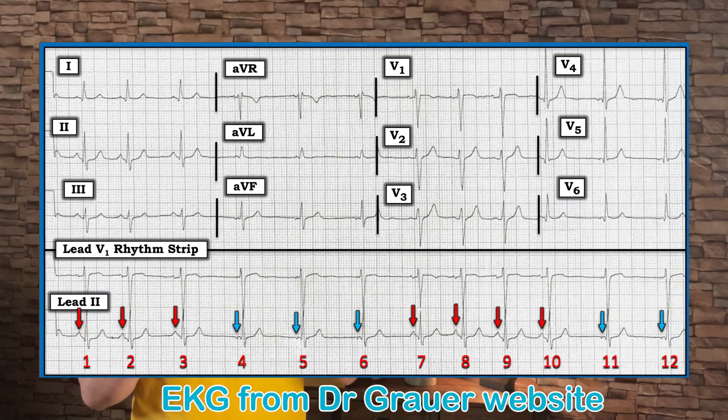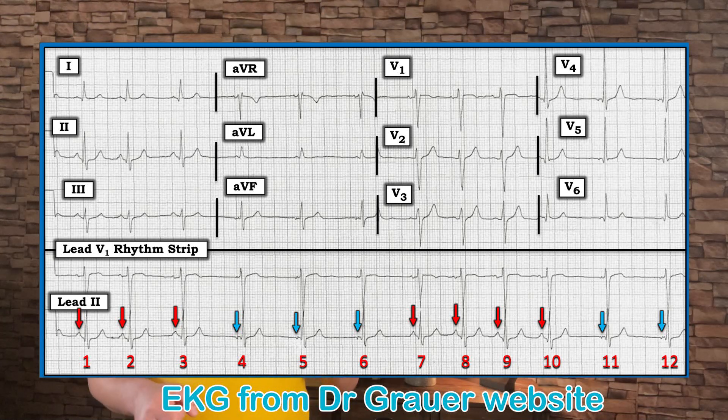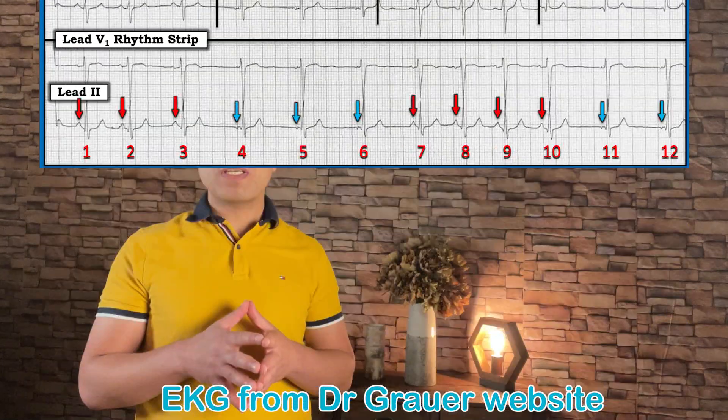Wandering pacemaker occurs when the pacemaker slowly and gradually shifts from the sinus node to another atrial focus. The P wave shape changes gradually — not from beat to beat — which is why it requires a long rhythm strip to diagnose. Multi-atrial tachycardia (MAT), by contrast, shows P wave changes from beat to beat and is irregularly irregular, similar to atrial fibrillation. Wandering pacemaker is benign and requires no treatment.